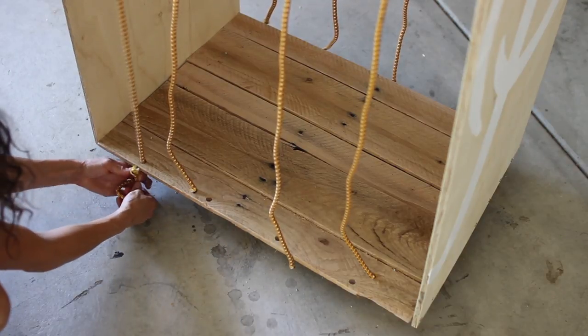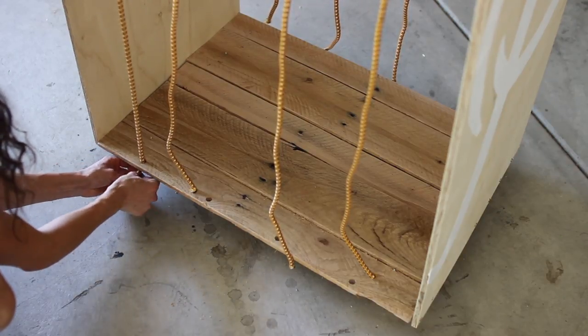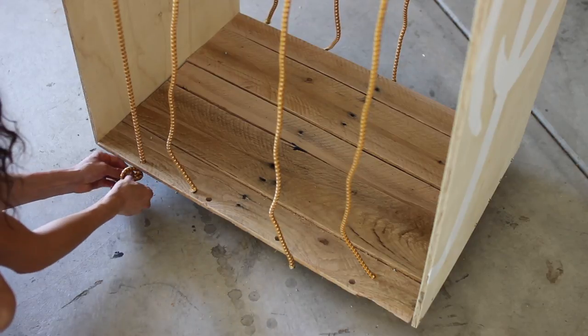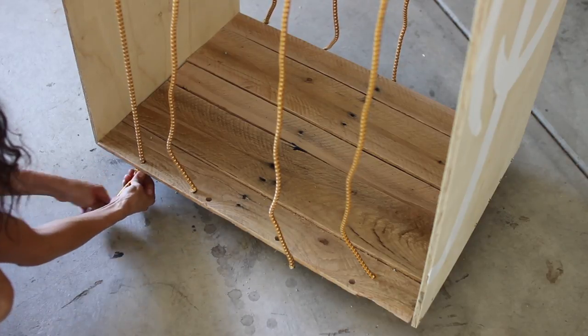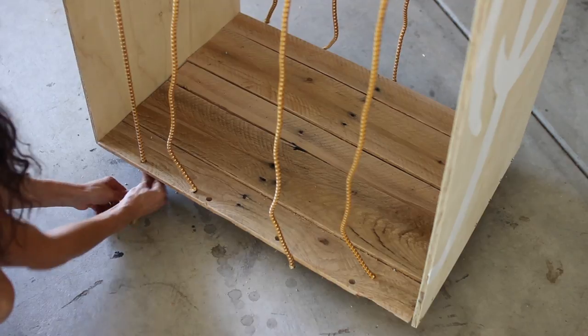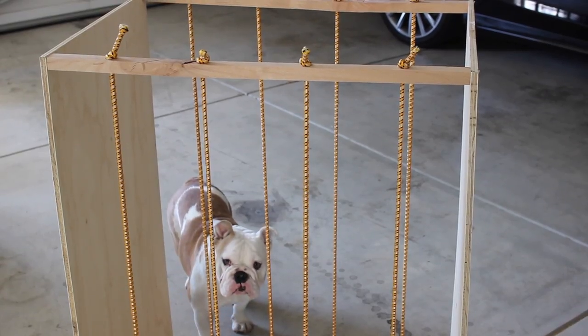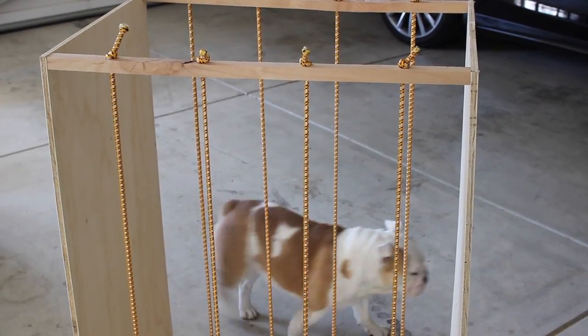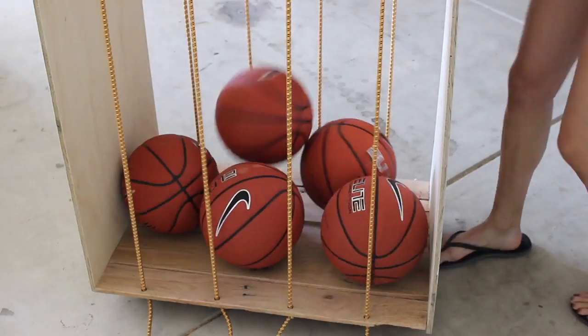Once you have all those holes drilled into the baseboard, you're going to go ahead and grab that bungee piece, pull it straight down, pull it through the hole and knot underneath it as tight as you can. So now you've connected all the pieces to both sides which act as the sides of the basketball rack for easy access for the balls.